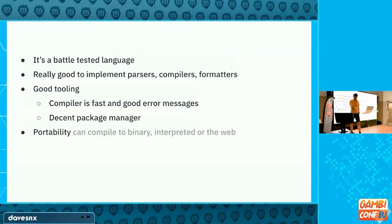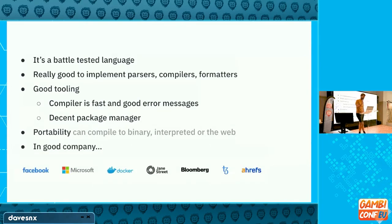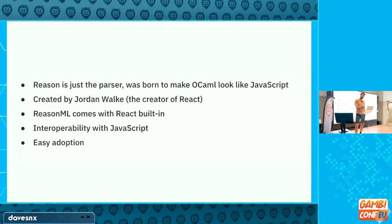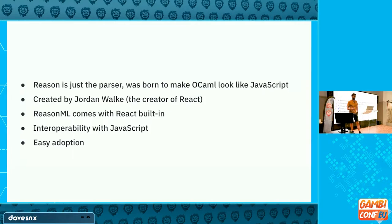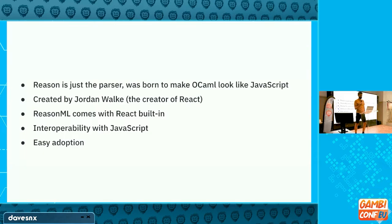One of the nice things about OCaml is its portability. You can compile to binary, interpret it, or compile to the web, so you can really distribute OCaml everywhere. Big companies use OCaml in production. Going back to Reason: it was a project from Facebook — from the same creator as React — with the idea of bringing all the good compiler parts of OCaml and making it look like JavaScript, so we can leverage all the JavaScript ecosystem. One of the key things is that you can target the browser, making it very easy to adopt.